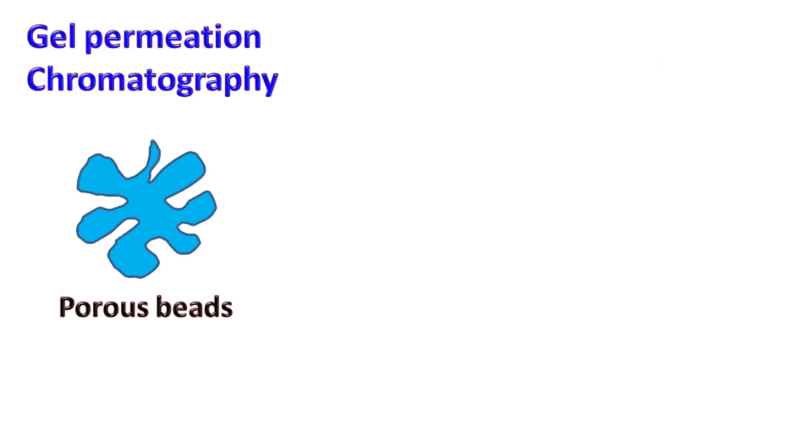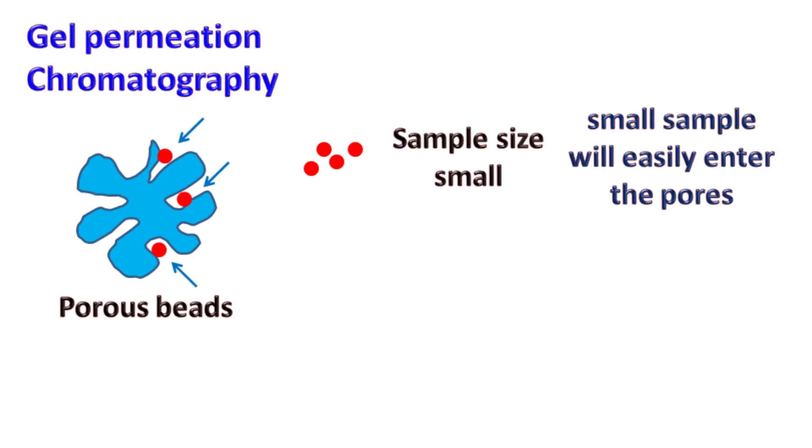Now, let's see the working of gel permeation chromatography. If the sample molecules are very small, they can easily enter the pores of the beads. If the sample molecules are large, they fail to enter the pores of the beads.